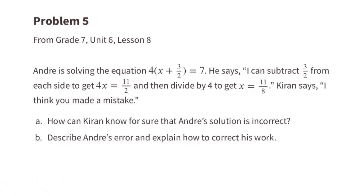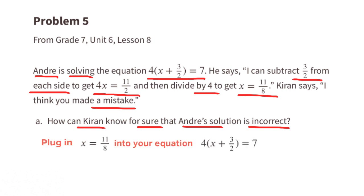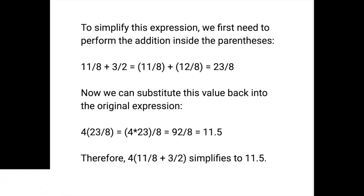Problem number 5. From 7th grade, Unit 6, Lesson 8. Andre is solving this equation. He says, I can subtract 3 halves from each side to get 4X equals 11 halves, and then divide by 4 to get X equals 11 over 8. Kieran says, I think you made a mistake. A. How can Kieran know for sure that Andre's solution is incorrect? Andre's solution said X equals 11 eighths, so let's plug in 11 eighths into the equation for X. Doing it Andre's way, the equation simplifies to 11.5, not 7.